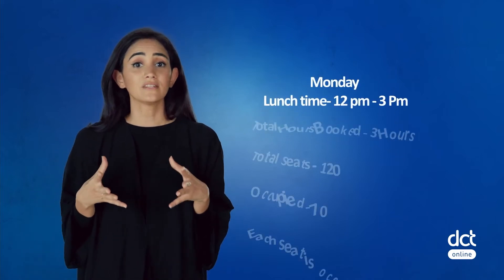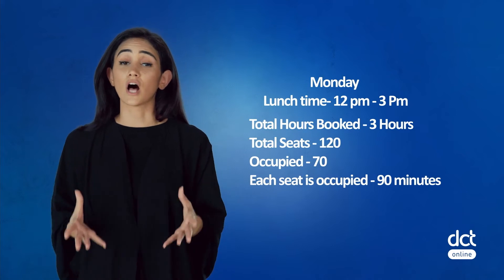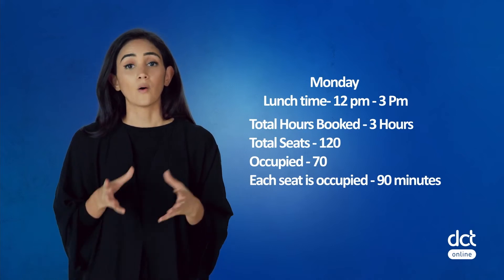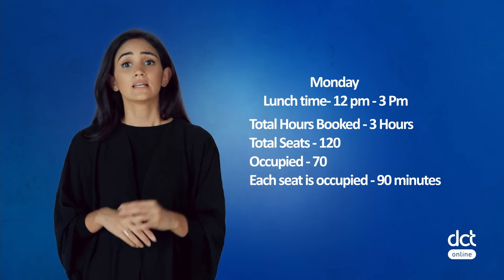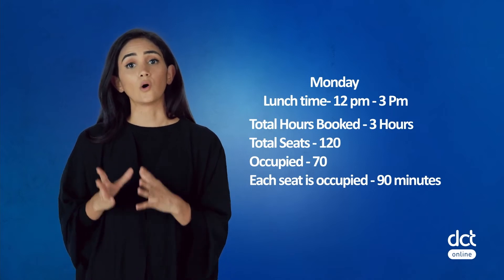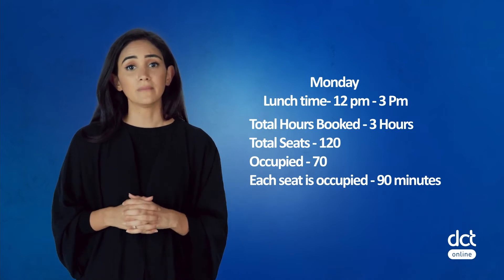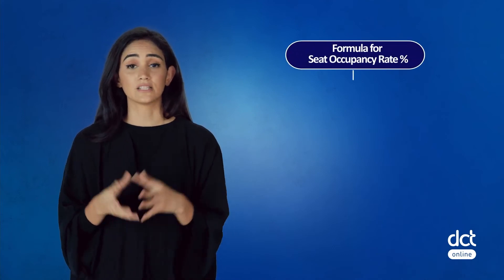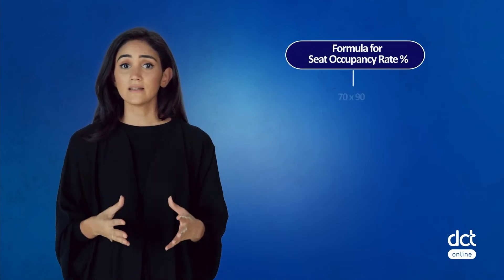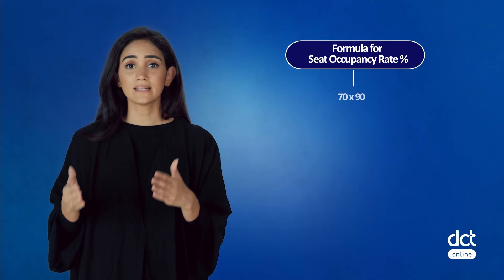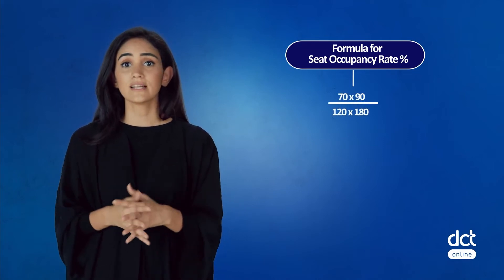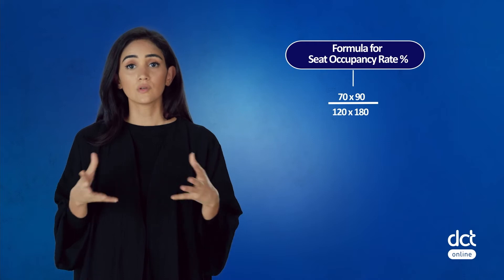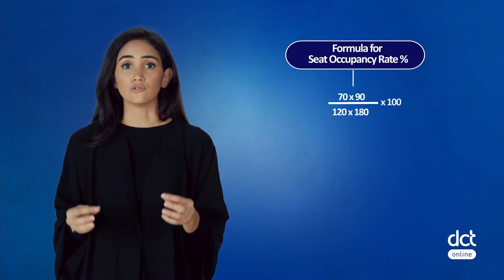Assume you have 70 seats occupied out of a total of 120. However, although the restaurant is open for three hours, each seat is occupied only for 90 minutes. So then, the seat occupancy percentage equals 70 multiplied by 90 divided by 120 multiplied by 180, which gives you 29.2%.